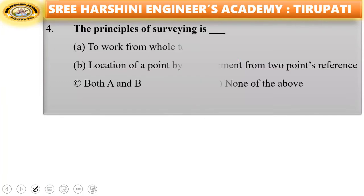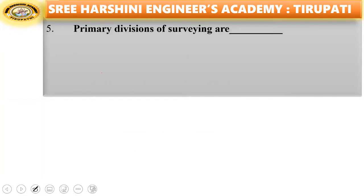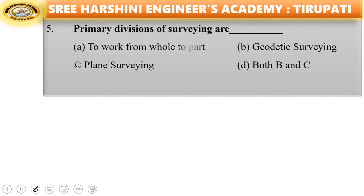Fourth question: the principle of surveying is — to work from whole to part, location of a point by measurement from two reference points, both A and B, none of the above. Option C — both A and B — is the right answer. The principles of surveying are to work from whole to part and to locate a point by measuring from two reference points.